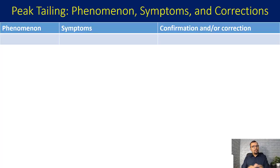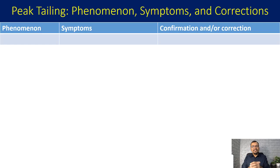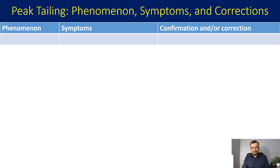This is the structure for today's discussion. We will talk about the underlying phenomenon, the respective symptoms, and then the confirmation and likely corrections. The first phenomenon we will discuss is the wrong combination of sample and your column packing.